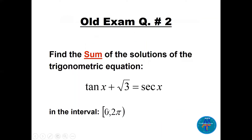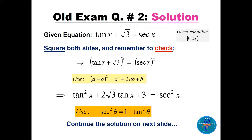Question two: find the sum of all solutions of tan x + √3 = sec x. Notice the difference from question one — here we don't have anything squared, so we cannot directly use the Pythagorean identity. What we can do is square both sides, and remember to check at the end.